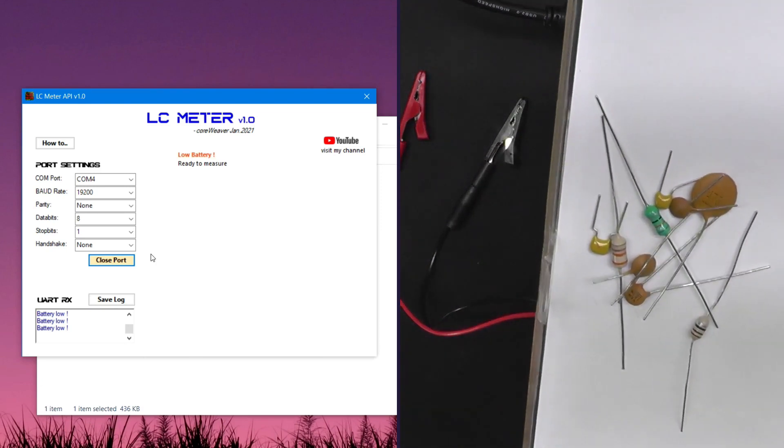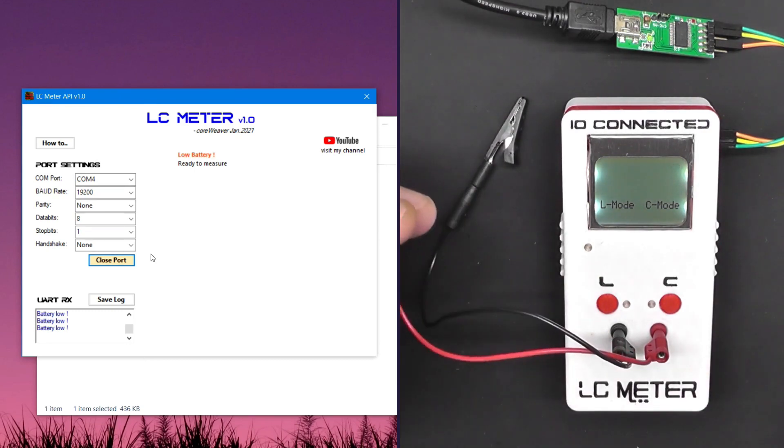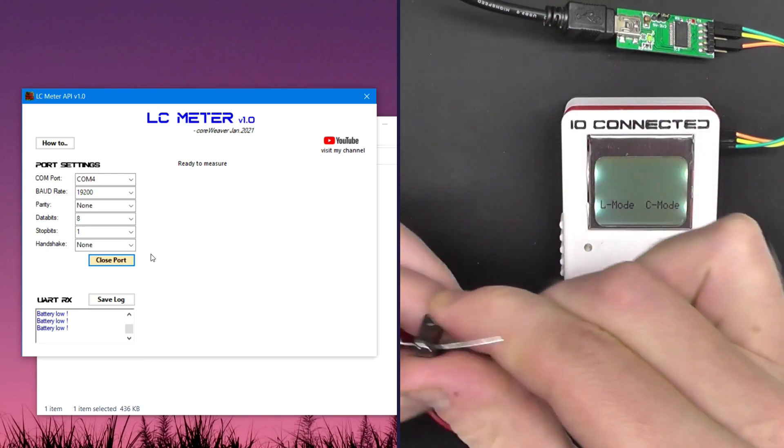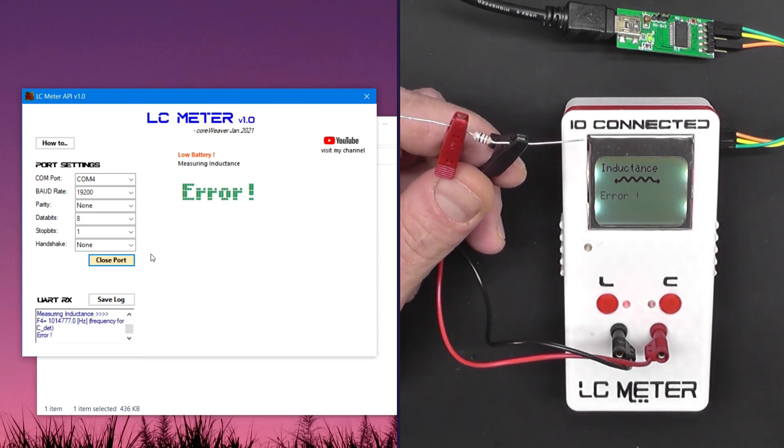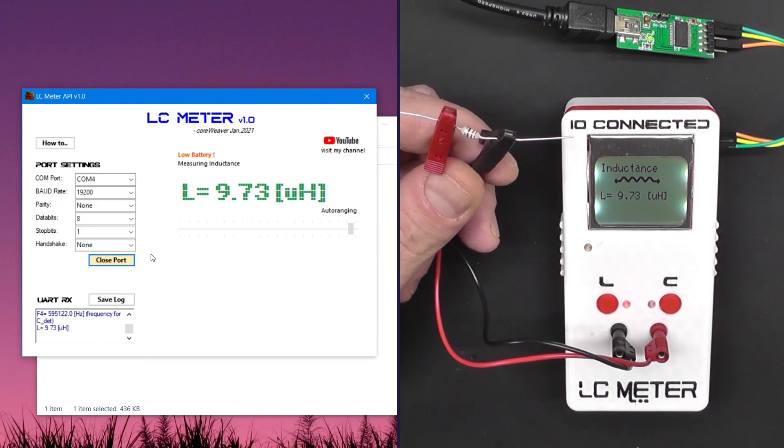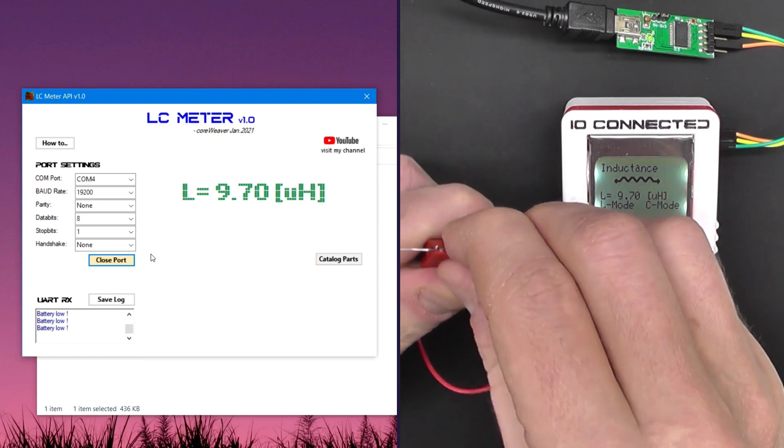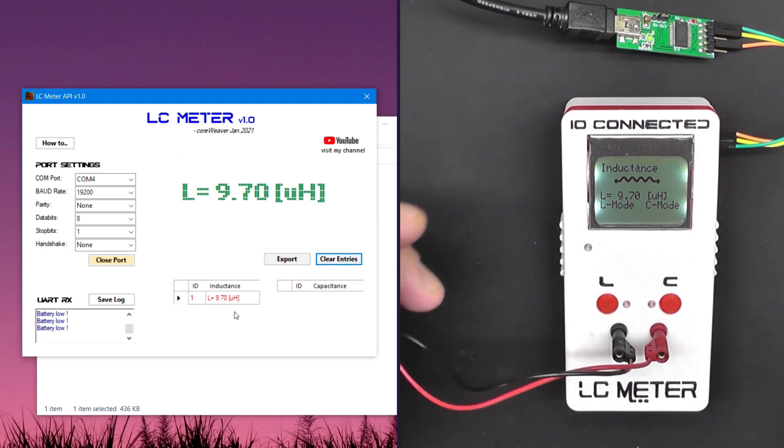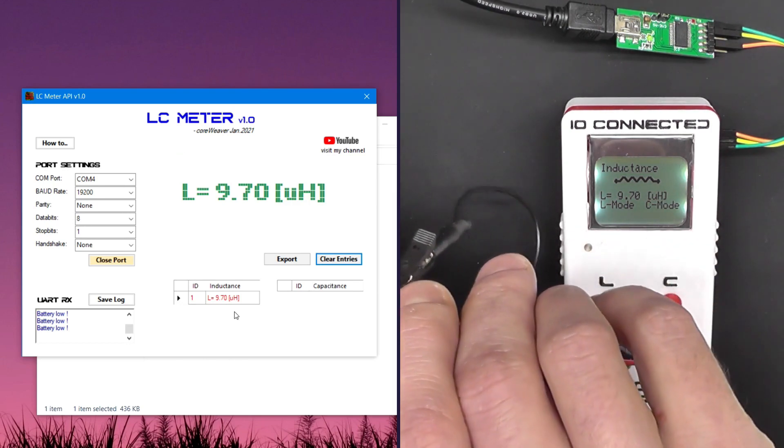All right, so I'm going to use these parts for this test. We're not only going to measure their values, but we're going to create a database, a catalog for the values. And it measures the value of this inductance, 9.7 microhenries. And if I click on catalog parts, the value appears here. I'm going to speed up the video a little bit and measure all the components.